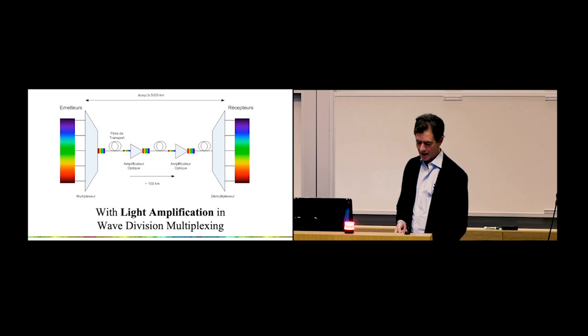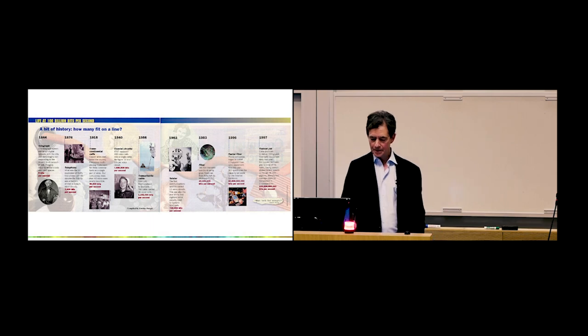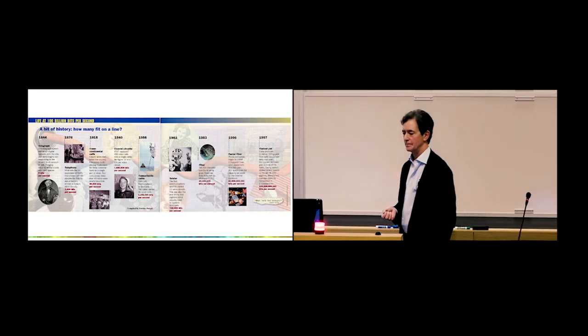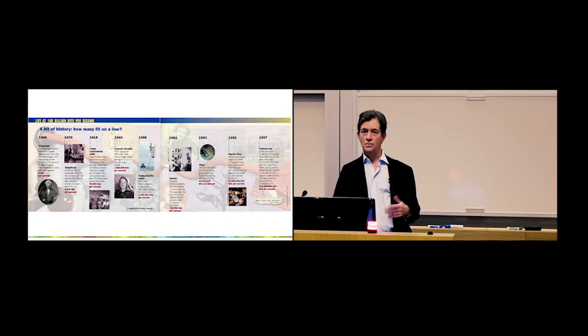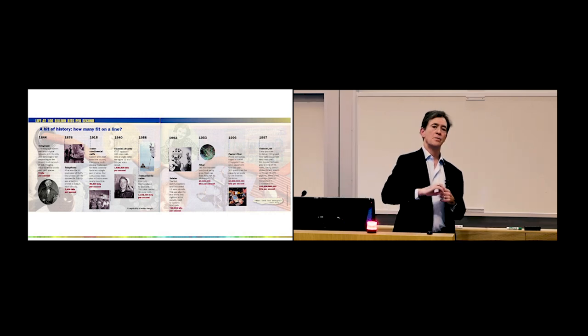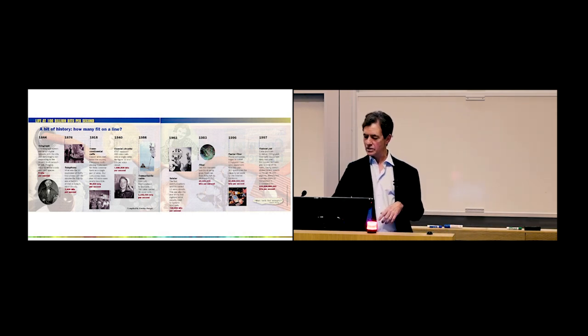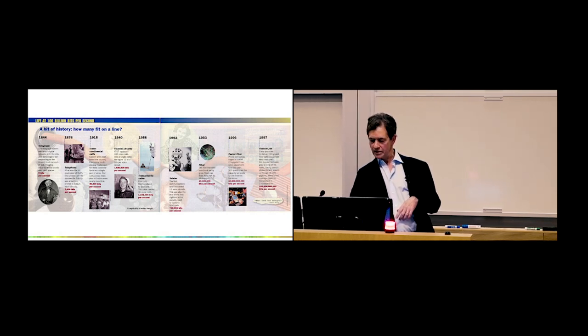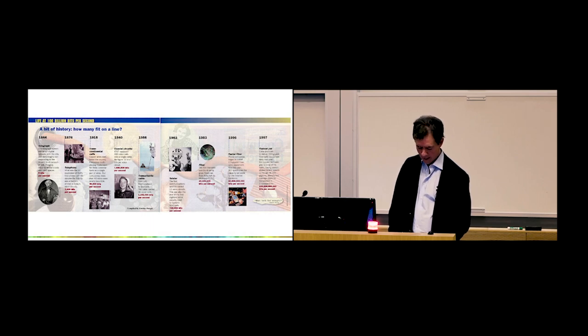I wanted to show you a timeline. This is from Forbes magazine, bits per second. Over here on the far left is 1844, the telegraph, eight bits per second. If you fast forward to 1983, where the first fibers were being deployed, per line, 45 million bits per second. And then 14 years later, Sienna promises to deliver 100 gigabit fiber optic equipment. It was 100 billion bits per second by 1997.